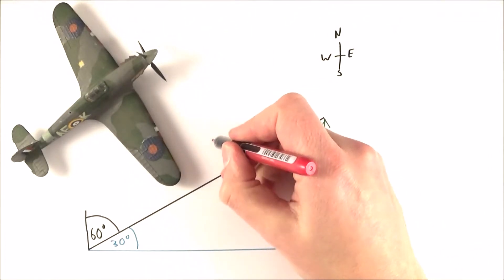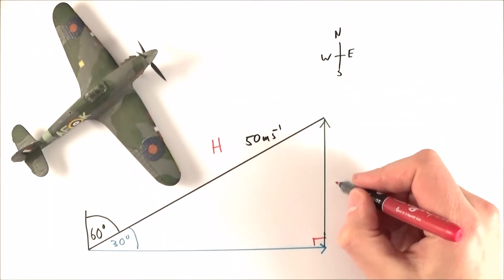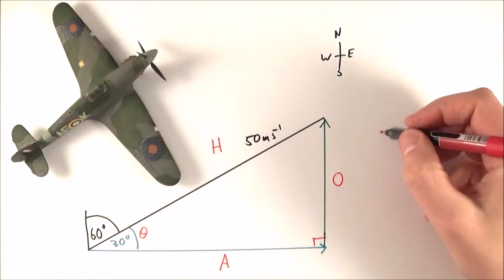So what we have here is a hypotenuse, the longer side. We have the side opposite to the angle and we also have the side adjacent to the angle. And effectively what we do know is we know theta and we know the hypotenuse. And initially I'd like to work out the length of this adjacent side.